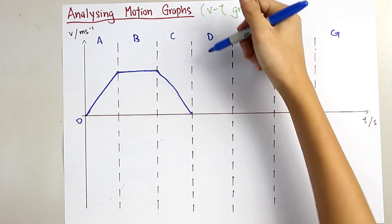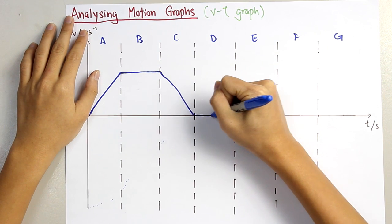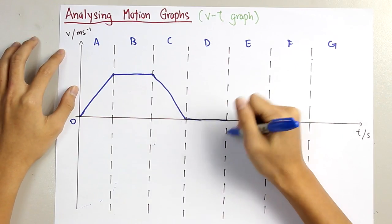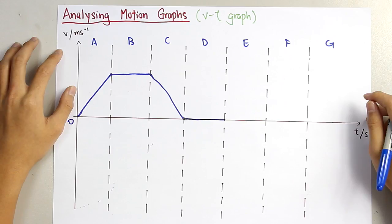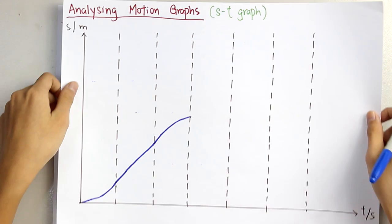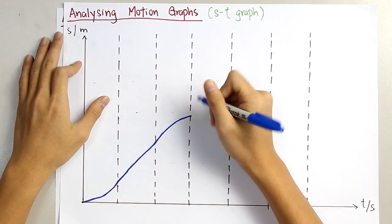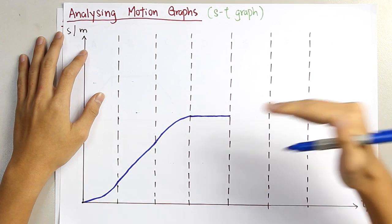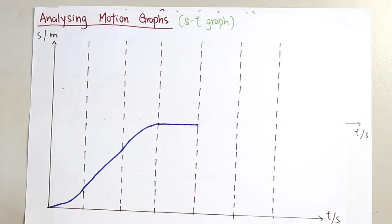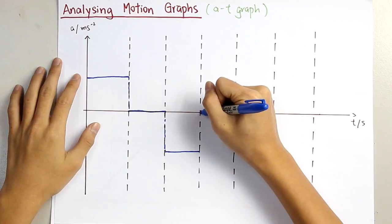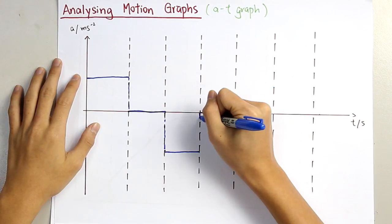For section D, a horizontal line at zero. This shows that it has zero velocity, so there won't be any change in displacement — the displacement graph will be a horizontal line. And for the AT graph, since it has zero velocity and it is constant, the acceleration will be zero again.